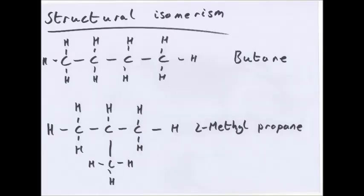Alkanes undergo structural isomerism. So you can move the carbon, well the CH3 group somewhere else on an alkane. You've got butane, then 2-methyl-propane.